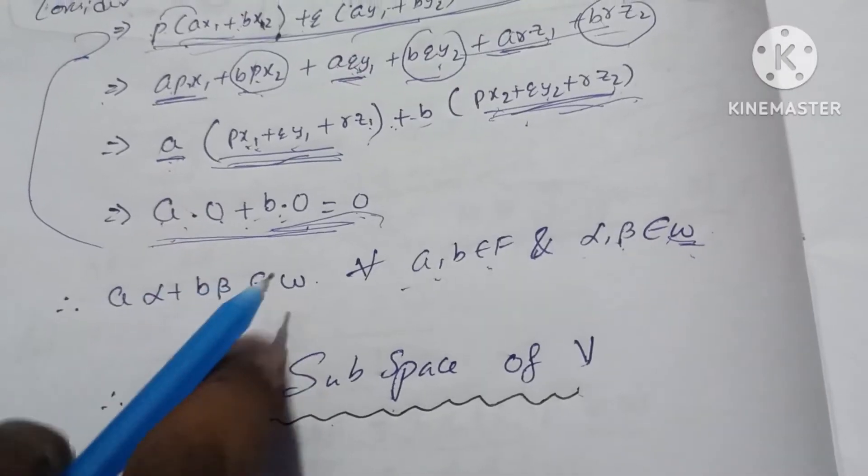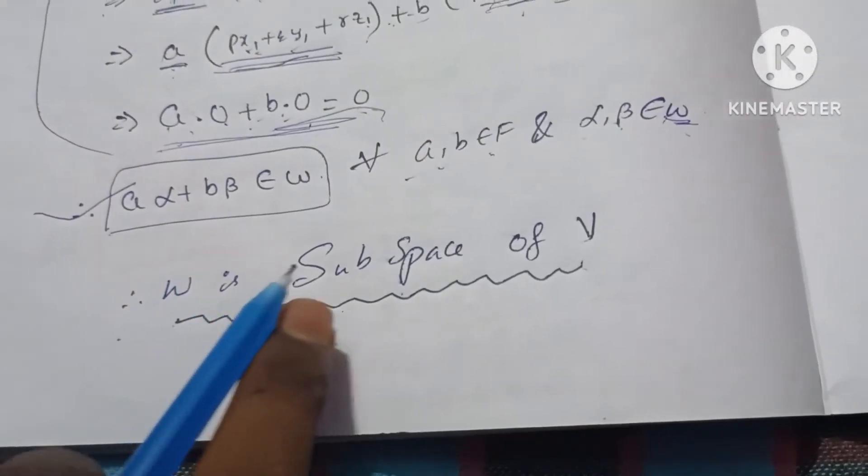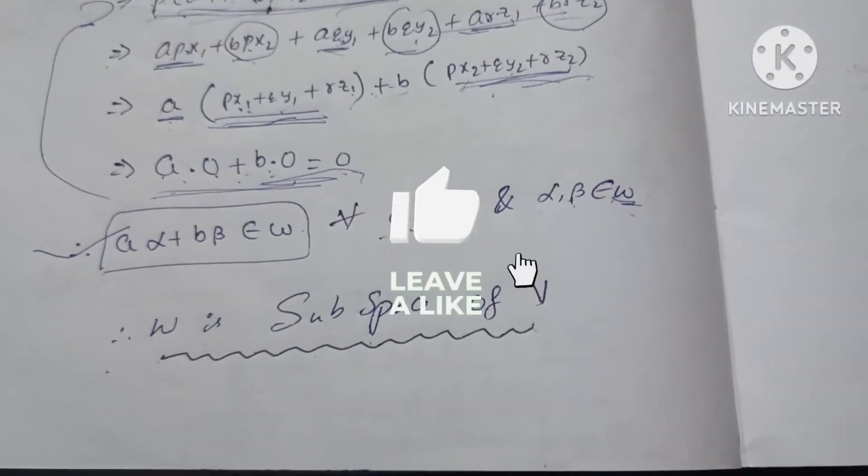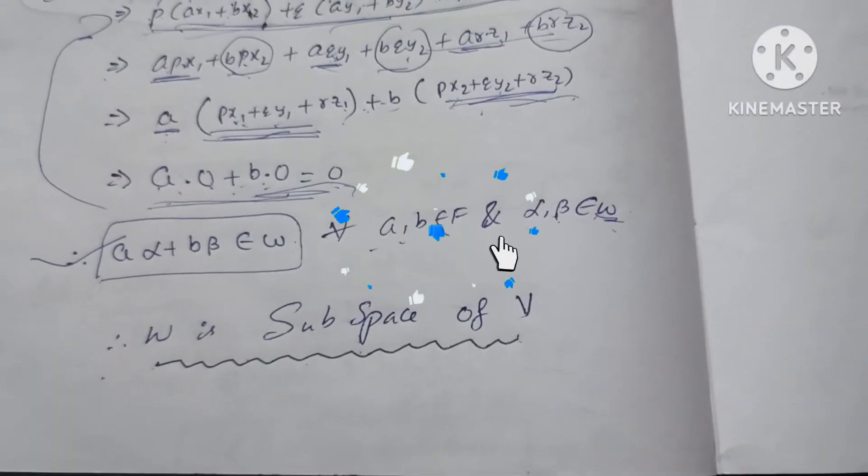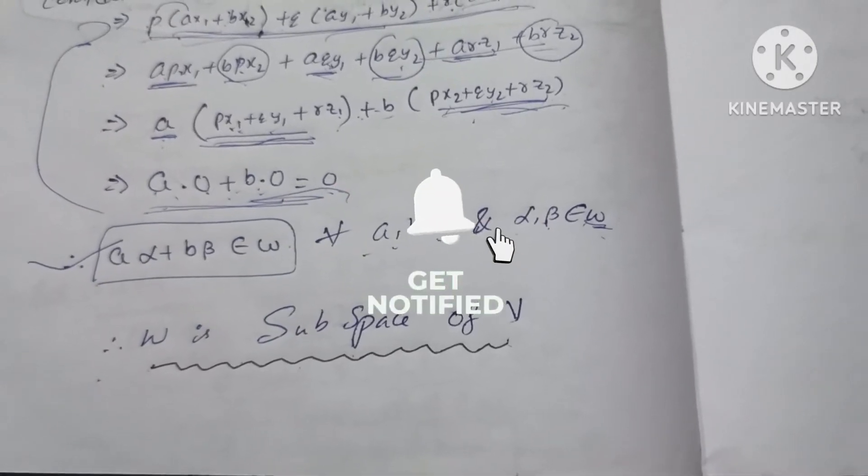We will prove this condition. Therefore, W is a subspace of V. So this is the question explanation. Please like and share the video. Subscribe to our channel. Thank you.